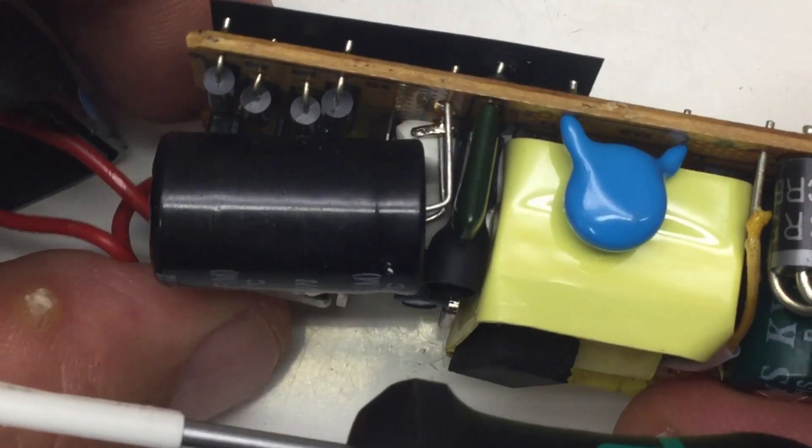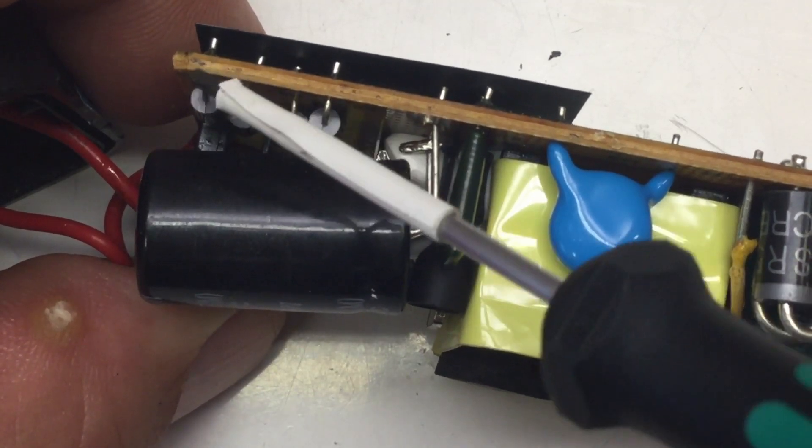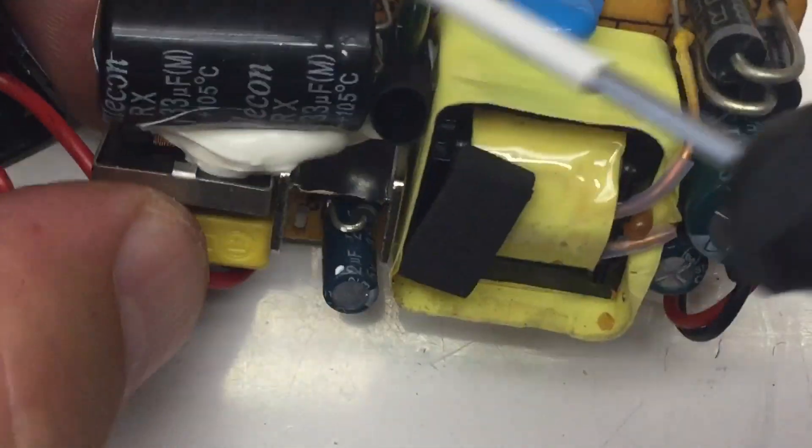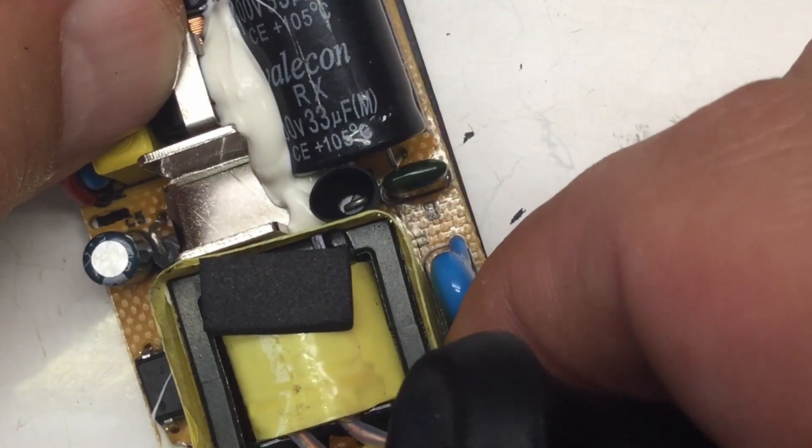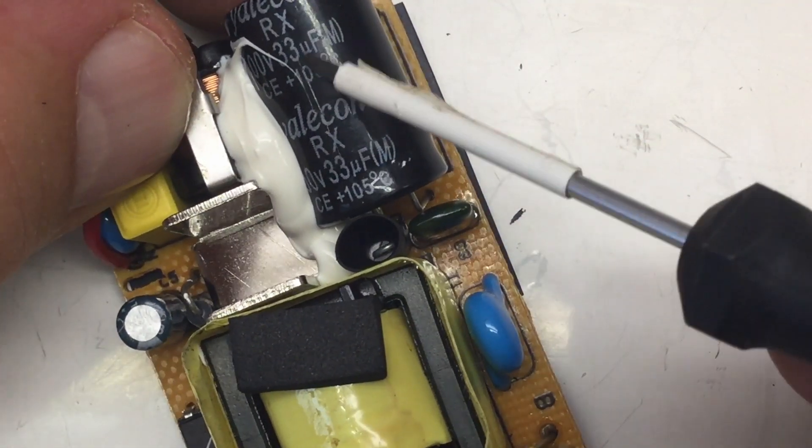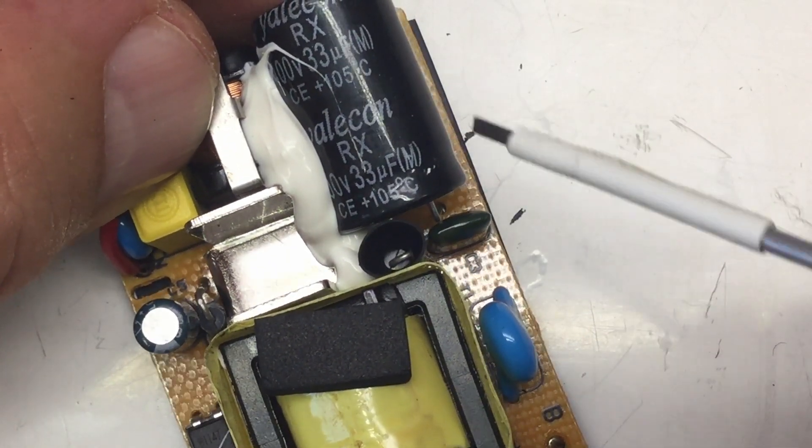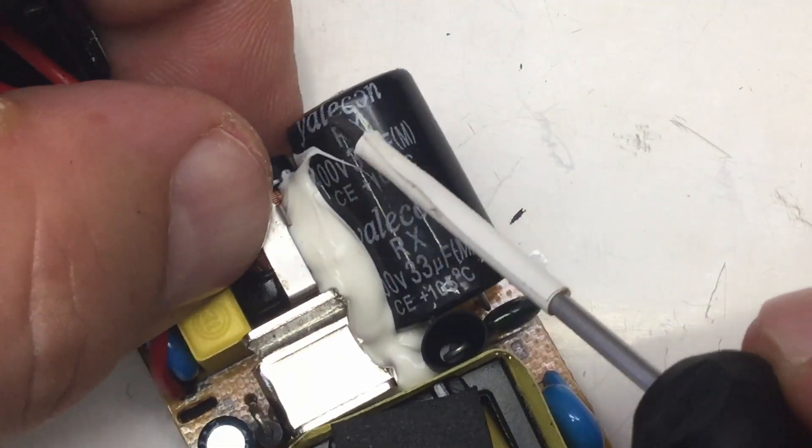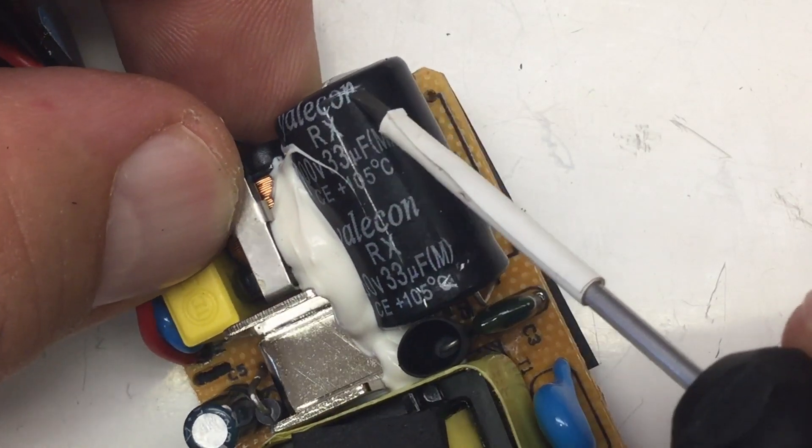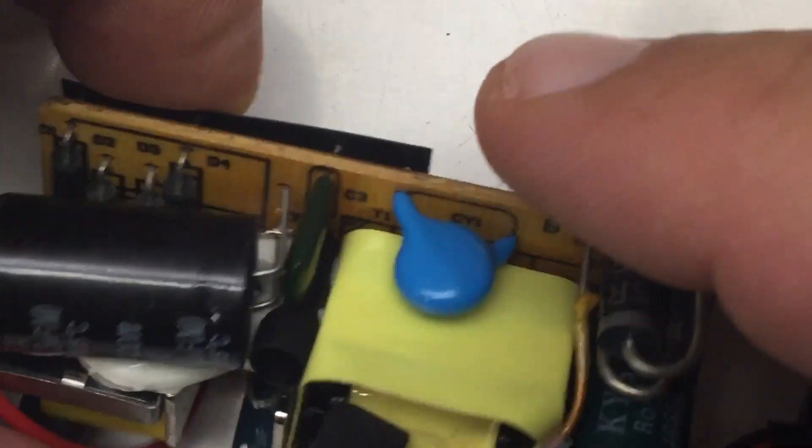X or Y filter capacitor. A common mode choke. And then down here, a full bridge rectifier made out of four single diodes. And this is filtered by this capacitor, which is 400 volts, I guess, 33 microfarads. Also for 105 degrees Celsius. Also something with Y. Valicon. So cheapy stuff in here.